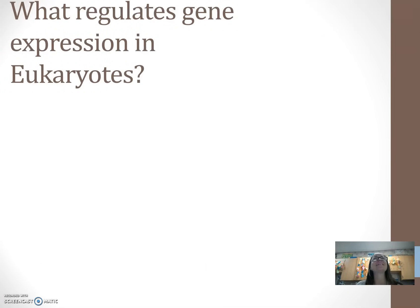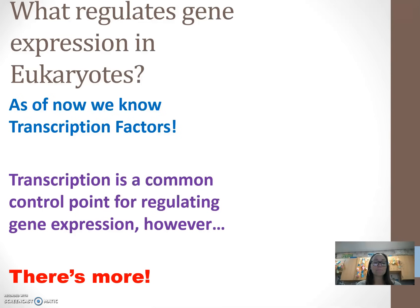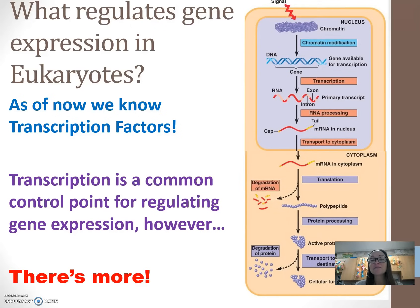So now, what regulates gene expression in eukaryotes? How do we know when to turn on or turn off our genes? We've learned about transcription factors being required — if we don't have transcription factors, then we can't do gene expression. But there's more. Transcription is a common and easy area to control the amount of protein being made, but there are actually a whole lot of different steps involved in ultimately regulating the final protein product. We're going to focus mostly at the area of chromosomes and transcription, but we'll touch on the end parts as well.